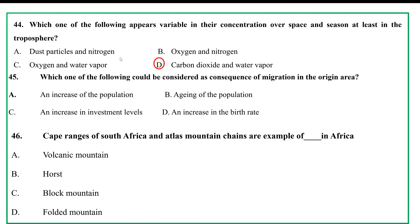Which one of the following could be considered a consequence of migration in the origin area? A. An increase of population, B. Aging of the population, C. An increase in investment levels, D. An increase in universities.